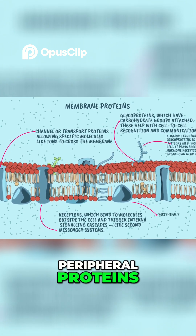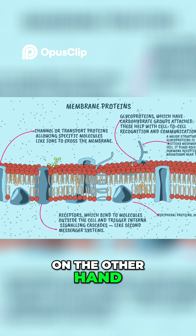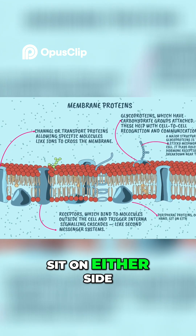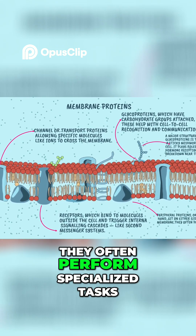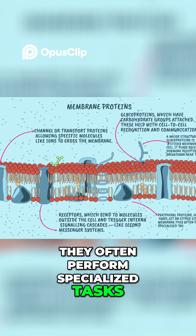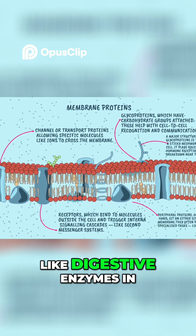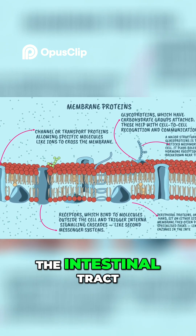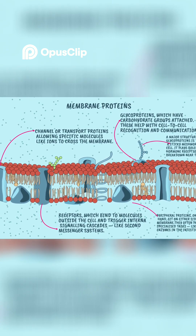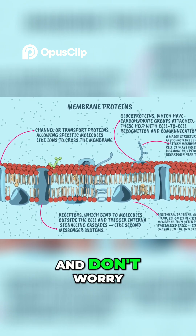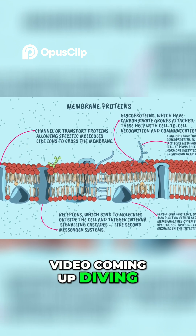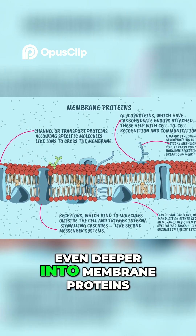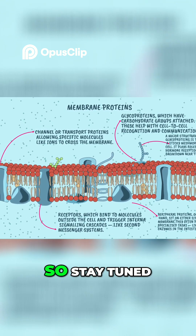Peripheral proteins, on the other hand, sit on either side of the membrane. They often perform specialized tasks, like digestive enzymes in the intestinal tract. And don't worry — there's a whole video coming up diving even deeper into membrane proteins, so stay tuned.